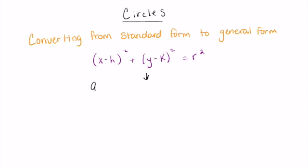circle is going to be ax² + by² + cx + dy + e = 0, where a